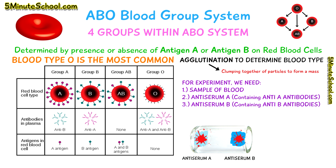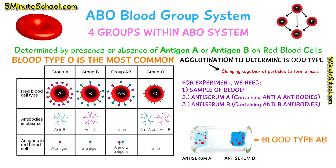To interpret the results: if we see agglutination on the anti-serum A side only, the sample must contain antigen A, so the blood type is A. If agglutination happens on the anti-serum B side, the sample must contain antigen B, so the blood type is B. If agglutination happens on both the anti-serum A and B sides, the sample contains both antigen A and antigen B, so the blood type is AB. If agglutination doesn't occur on either side, the sample doesn't contain antigen A or antigen B, so it's blood type O.